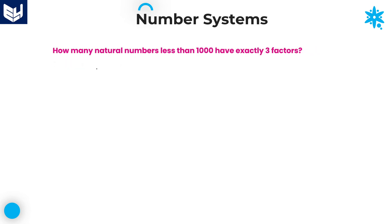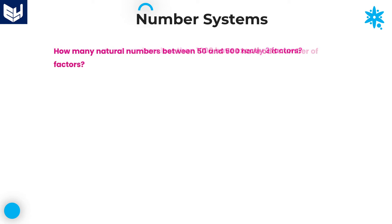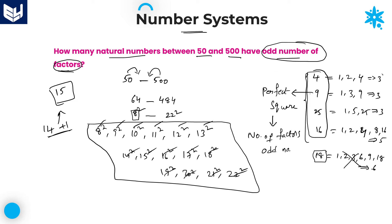Next question: How many natural numbers less than 1000 have exactly 3 factors? This is somewhat interlinked to the previous problem. In the previous problem we asked for which numbers the count of factors is odd; but in this problem, we want exactly 3 factors. Going back to the previous examples where the number of factors was 3, 3, and 3 — what are those numbers?